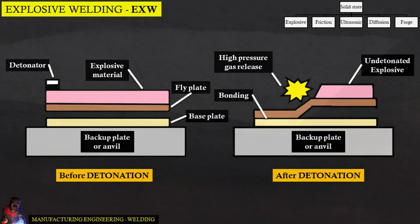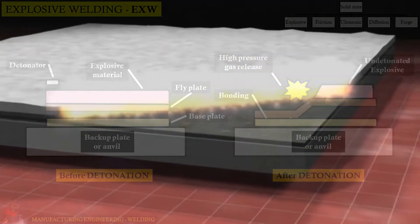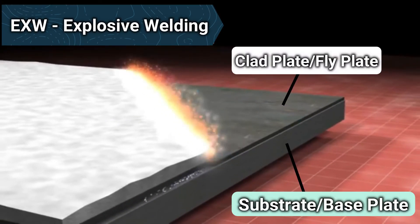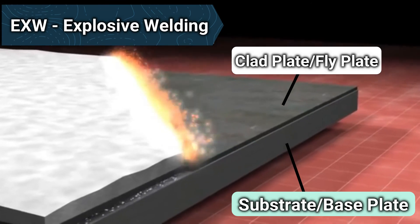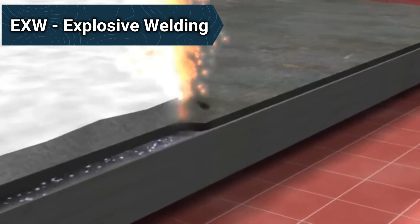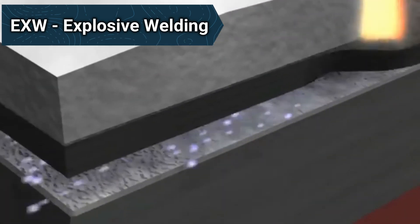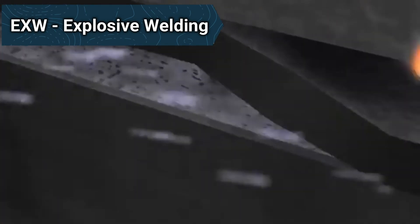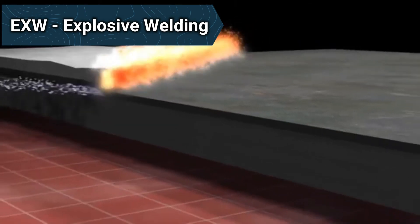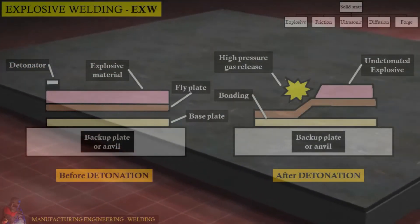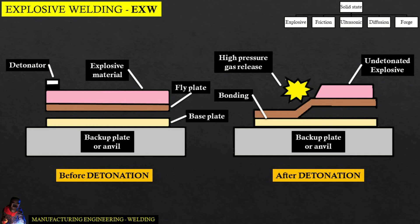An explosive weld is achieved by impacting the cladding plate against a substrate plate using the considerable energy from an explosive discharge, resulting in a high energy rate impact. The high interfacial pressure at the collision front between the cladding plate and the substrate plate must be greater than the yield strength of both materials, to permit plastic deformation within the surface layer to occur.